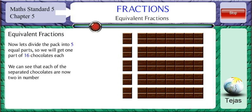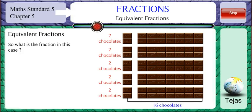We can see that each of the separated chocolates are now 2. So what is the fraction in this case? It is 2 by 16. That is, 2 parts out of 16 parts is considered.